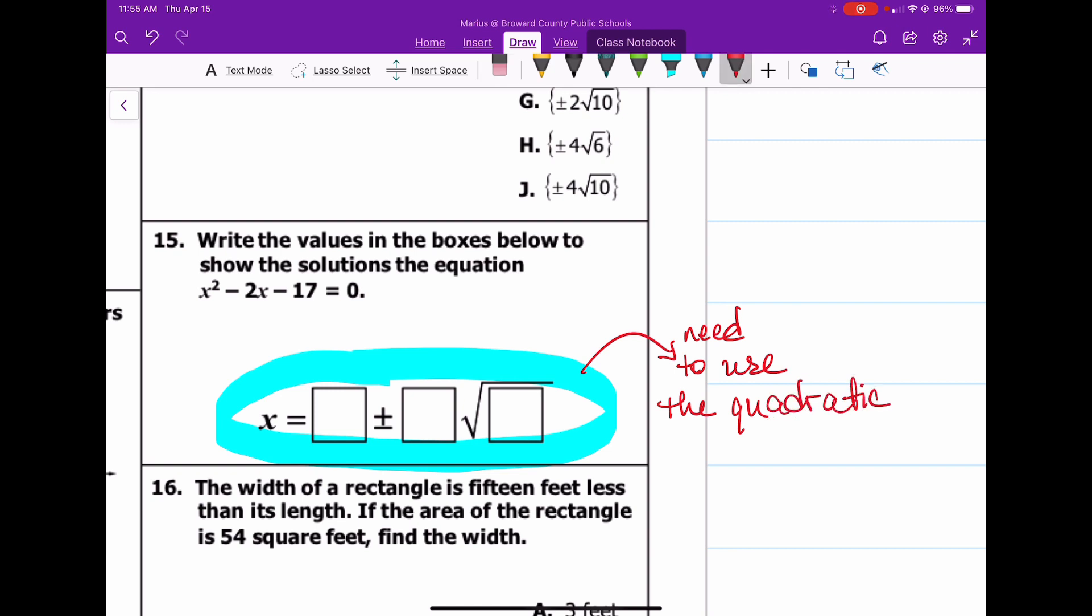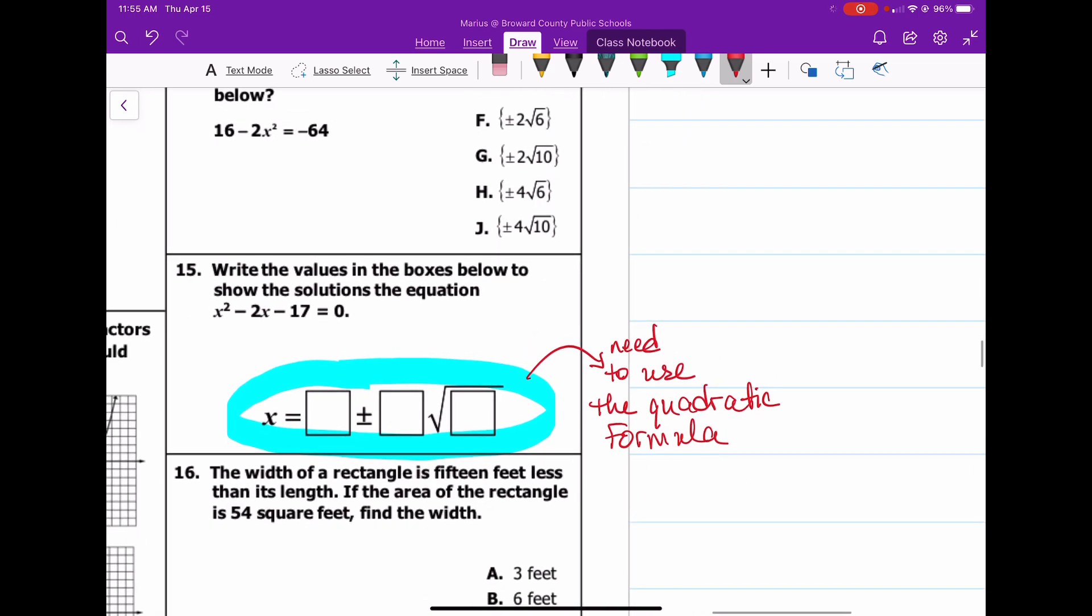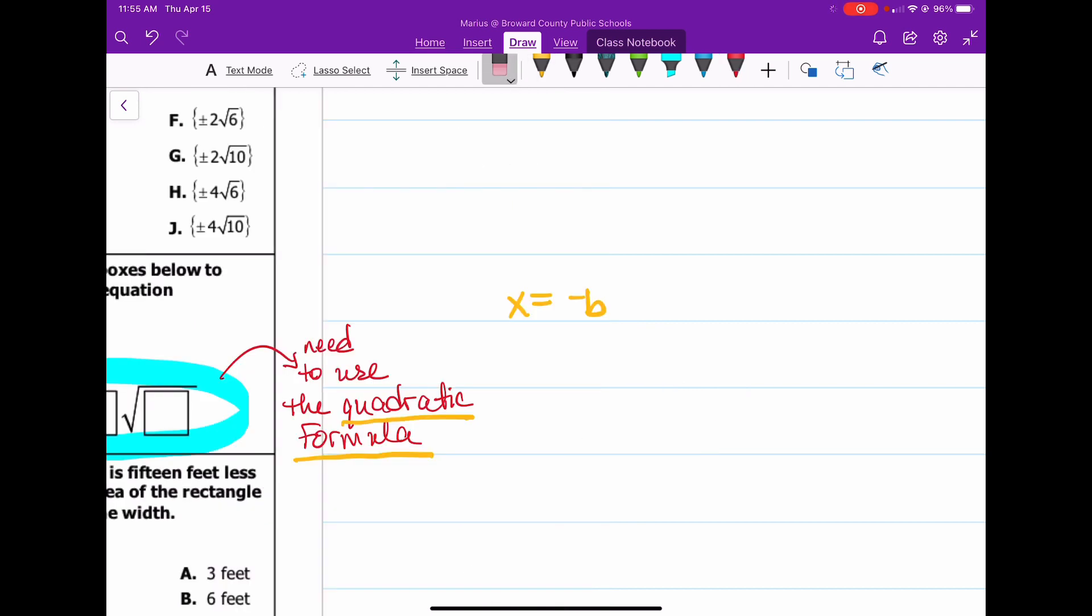We need to use the quadratic formula. Now, you may need to go to your notes to refresh your memory of the quadratic formula, but I'm going to go ahead and write it out. The quadratic formula is x equals negative b plus or minus the square root of b squared minus 4ac, all of that divided by 2a.